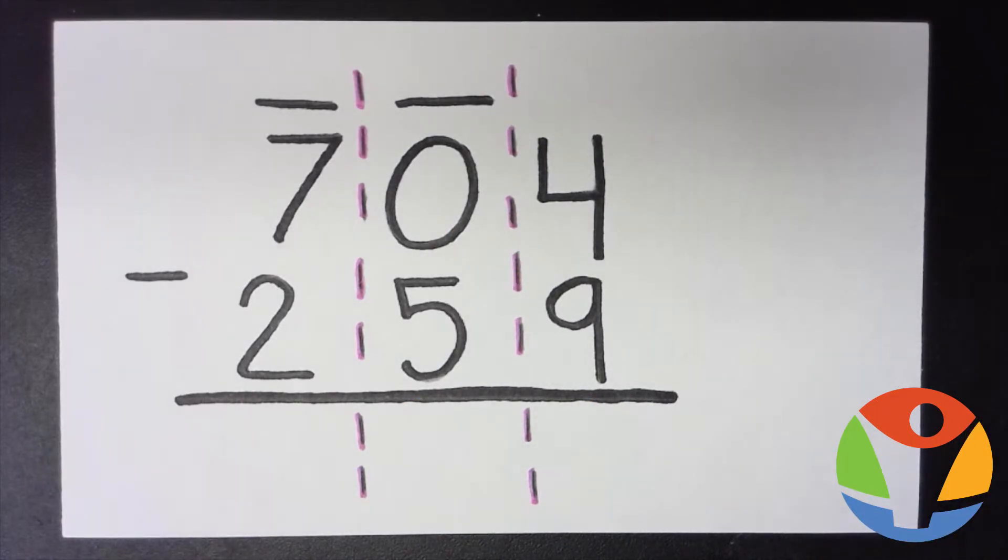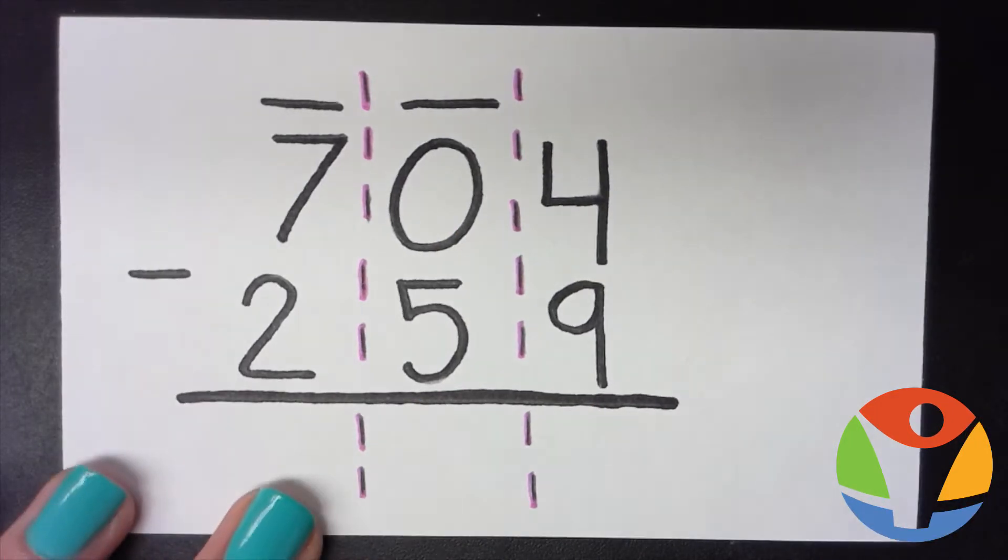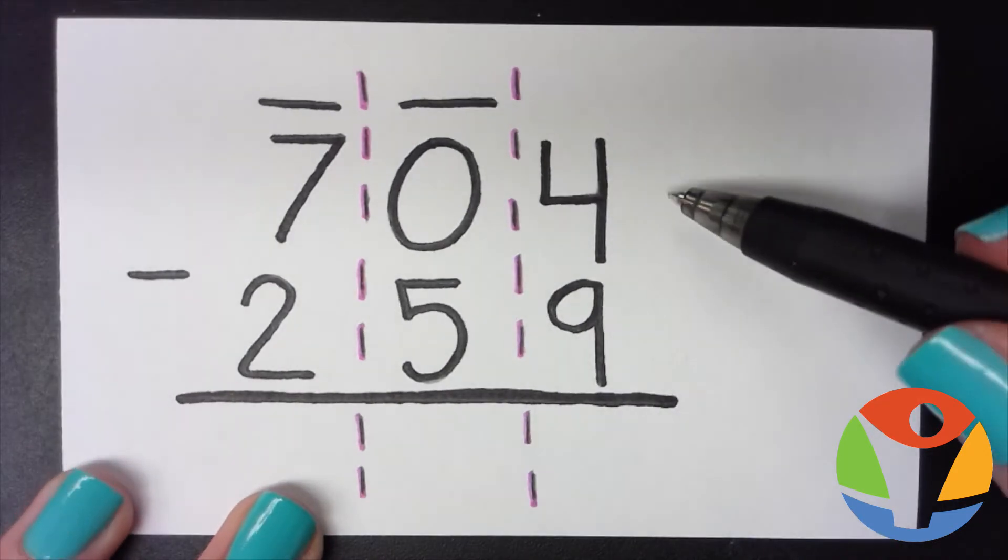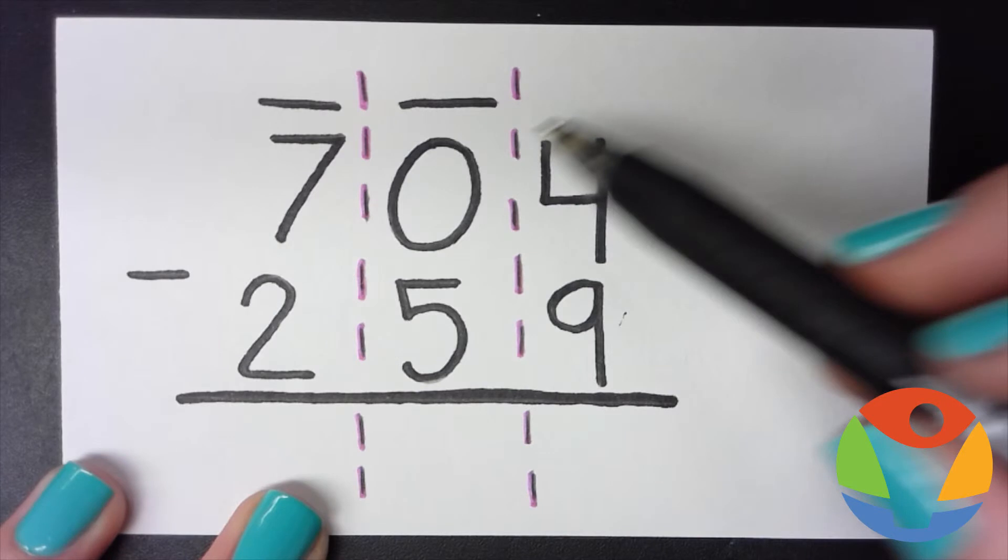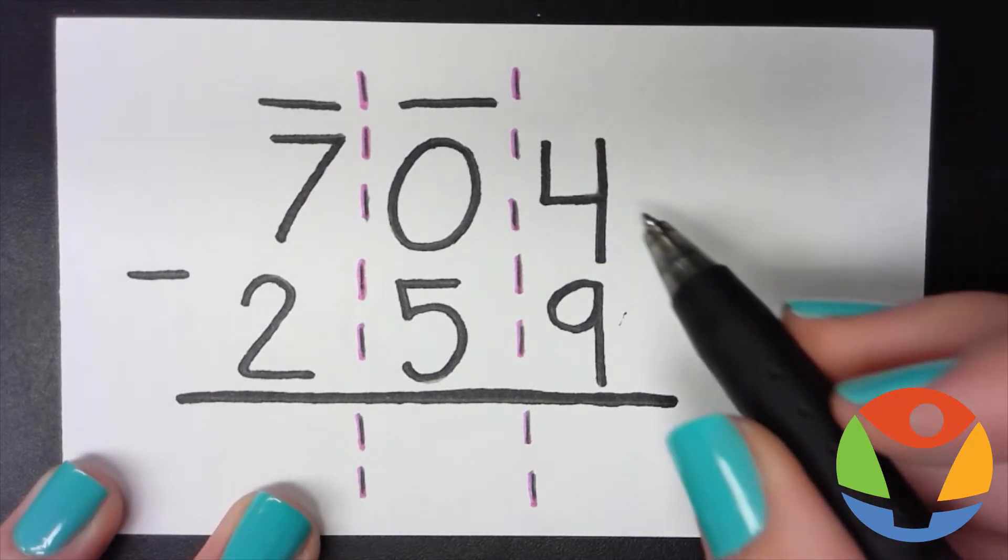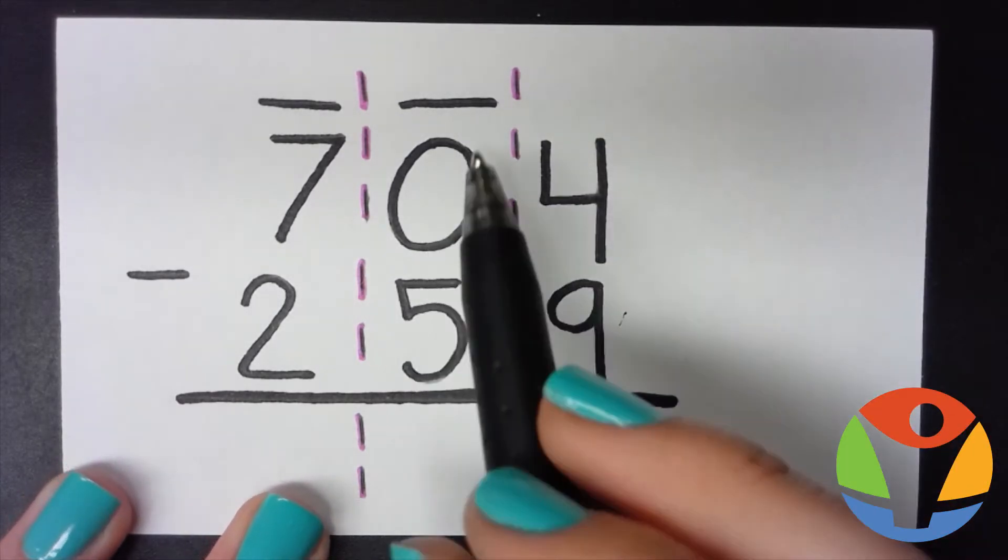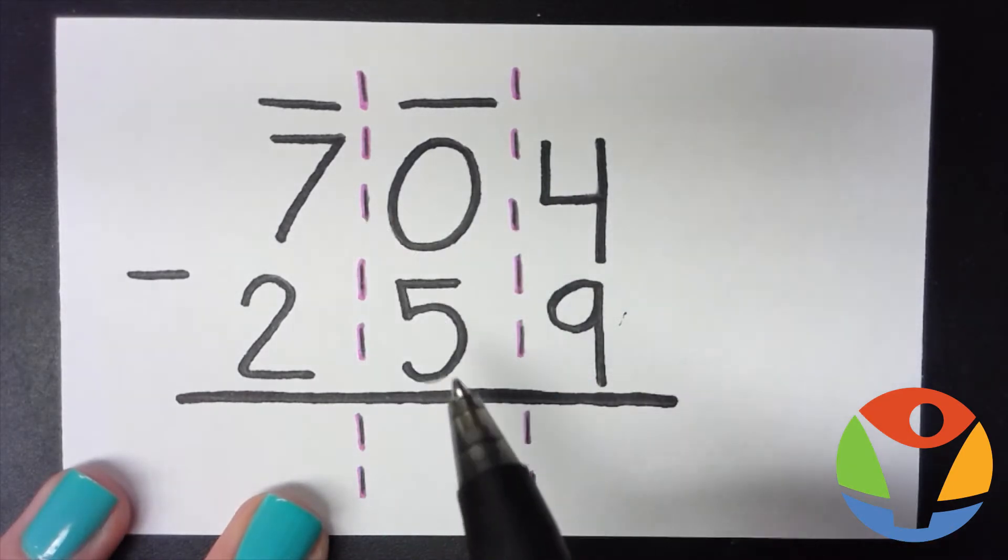Let's do one more together to make sure you got this. So there's more on the floor, so we have to borrow from next door. Since 4 is less than 9, can we borrow from zero? No, we can't.